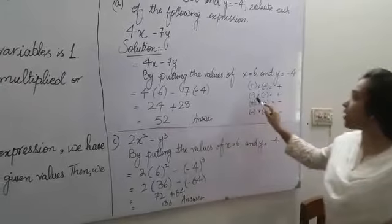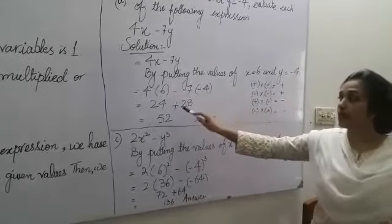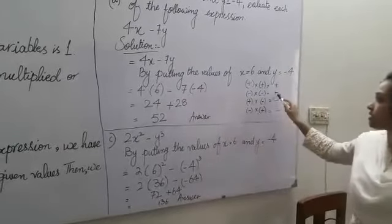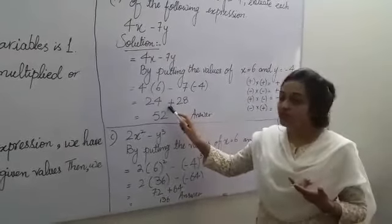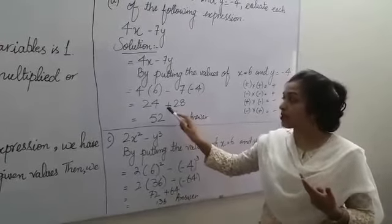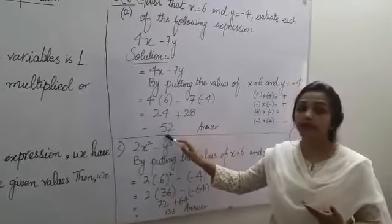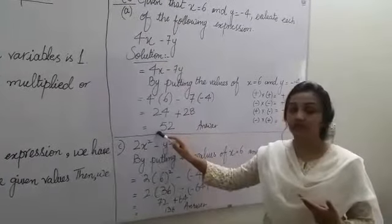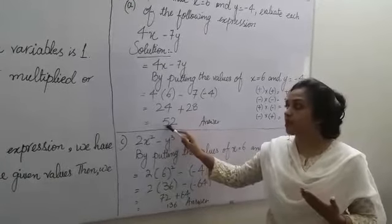And you already have known about that. If we multiply the negative sign then we get the positive answer like this. And if we multiply the positive sign then we have to add the values. And if we add 24 plus 28 then we get 52 with the positive sign. But there is no need to mention the positive sign over here.